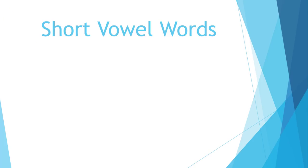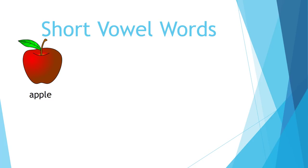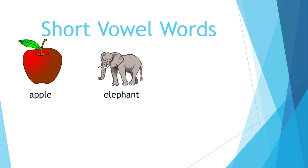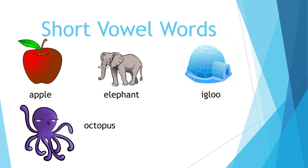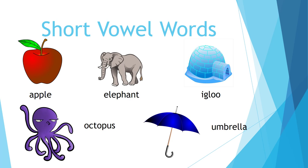Words that have the short vowel sound: A — Apple. E — Elephant. I — Igloo. O — Octopus. U — Umbrella.